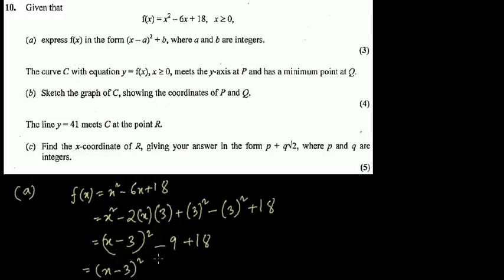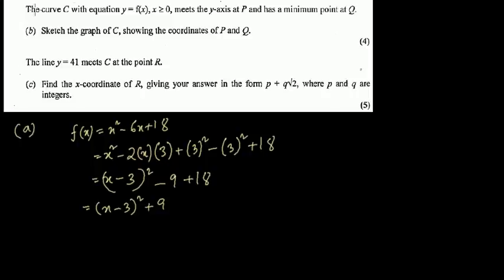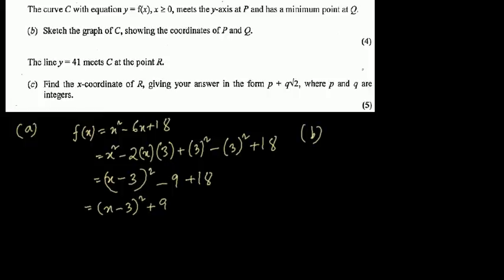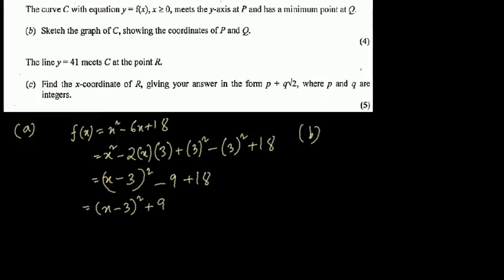Completing the square gives (x - 3)² + 9. For sketching in part b, we need to know where the curve cuts the y-axis, where it cuts the x-axis, and where the turning point is.